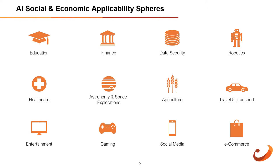AI in finance: the finance industry is implementing automation, chatbots, adaptive intelligence, algorithmic trading, and machine learning into financial processes. AI in data security: the security of data is crucial for every company, and cyber attacks are growing very rapidly in the digital world. AI can be used to make your data more safe and secure.